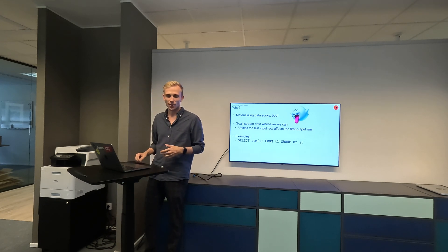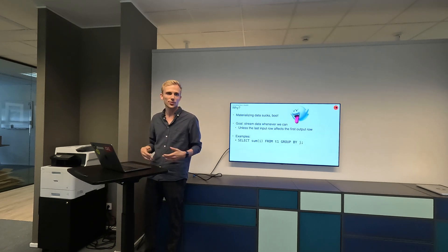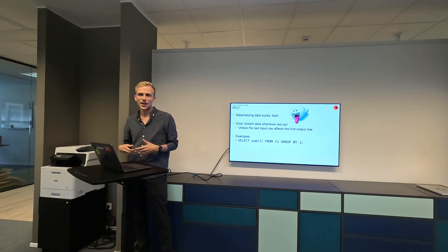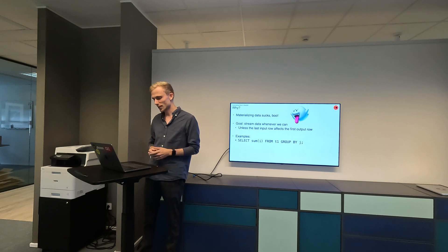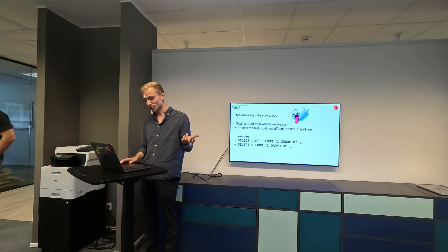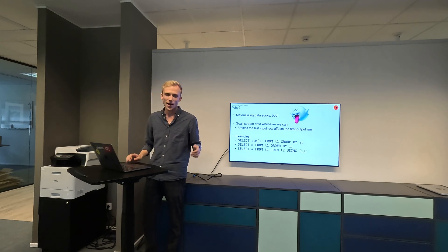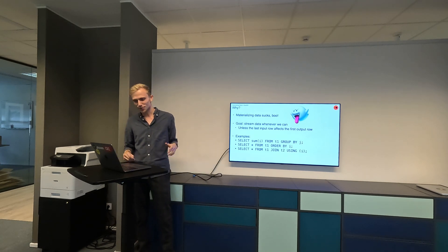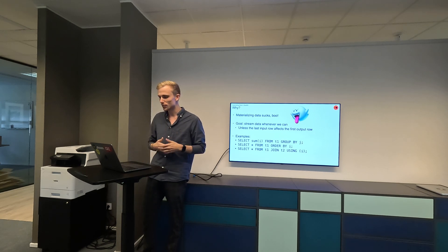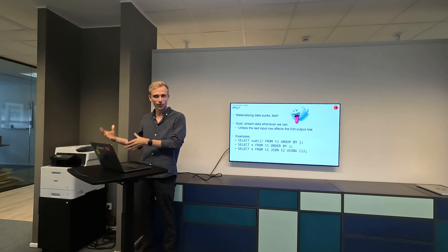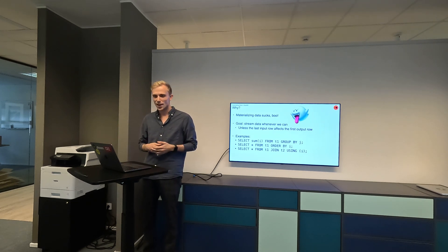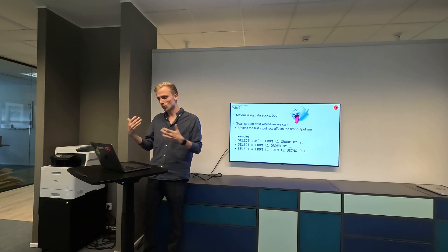Some examples: a group sum — the last input row might affect the sum of the first output row. Same with order by — the last row in might be the last row out. And then for the join, you have the special case that you materialize one side to build a hash table and probe using the other side. So you need all of the right side data to be in there before you can start probing.